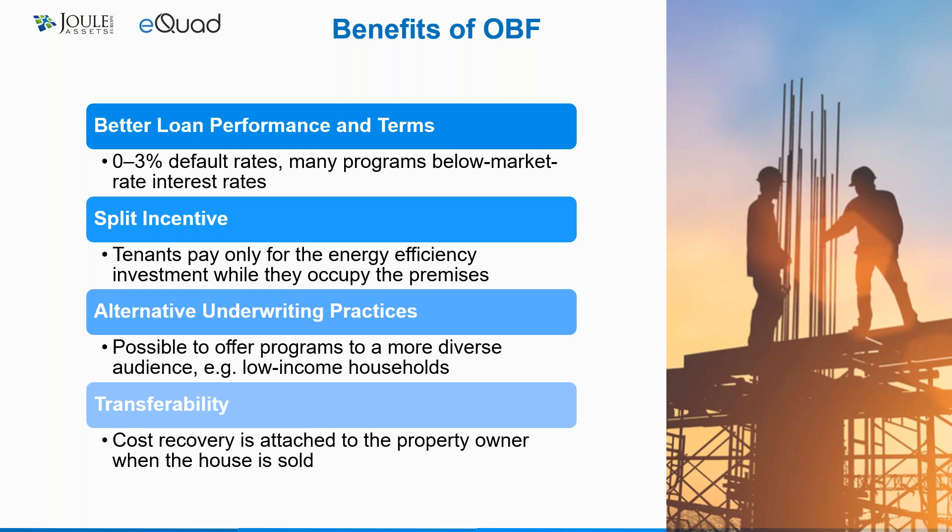The main benefits include better loan performance for investors — the US example had a very low default rate, showing that people tend to pay their electricity bills. On-bill is also very effective in solving the classic split-incentive problem, where the building owner doesn't want to pay for a project that brings benefits only to the tenant, and the tenant doesn't want to engage in projects that might last longer than their stay. With on-bill financing, the tenant can pay for the project themselves, and importantly can stop paying if they move out. The payment is attached to the meter and passes on to the new tenant — that's why we say it's transferable. On-bill also offers access to a broader audience, in particular less wealthy citizens.